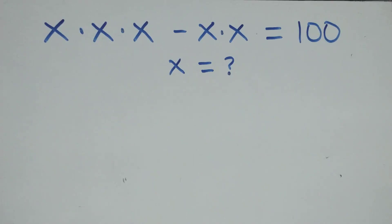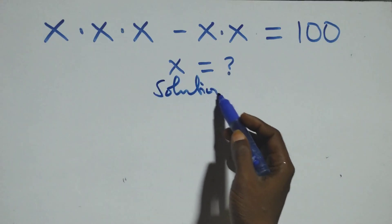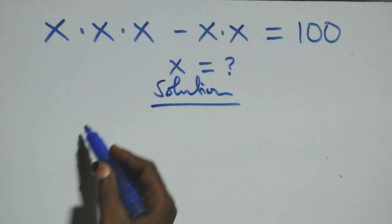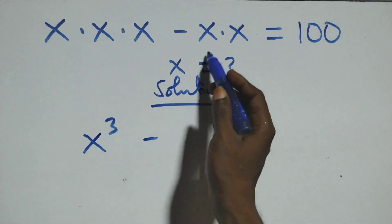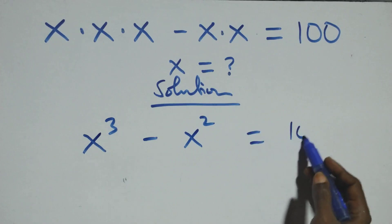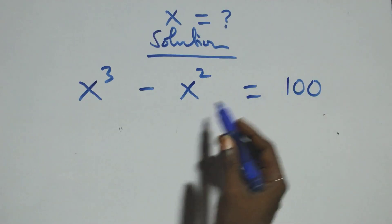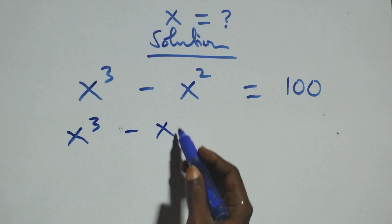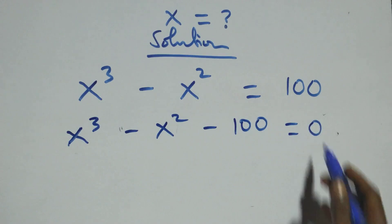Hello, you are welcome. How to solve this nice algebraic equation. What we have here, we can multiply x times x times x, written as x raised to the power 3 minus x times x, also x raised to the power 2, equals to 100 on this side. Then we take 100 to the left hand side and have x raised to the power 3 minus x raised to the power 2 minus 100 equals to 0.